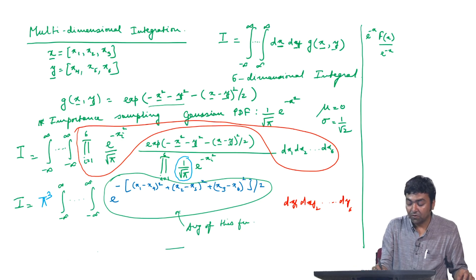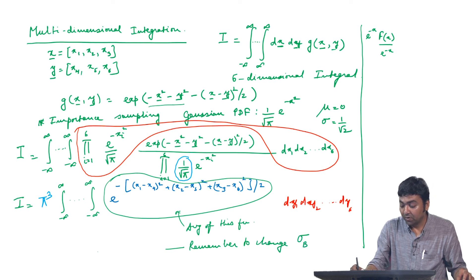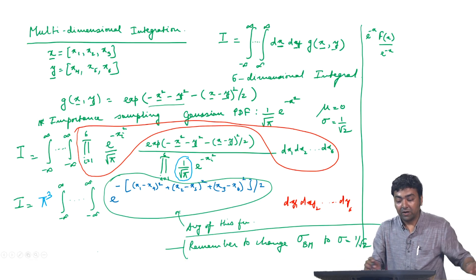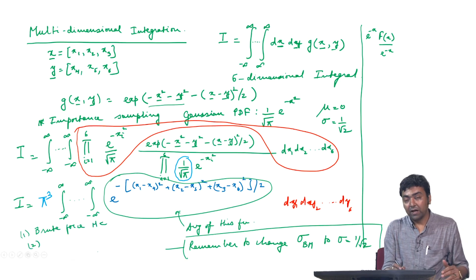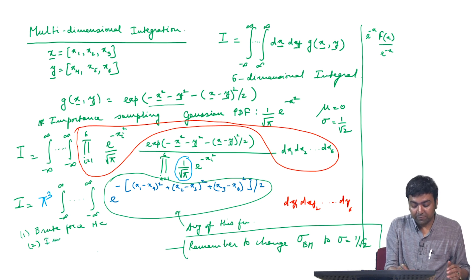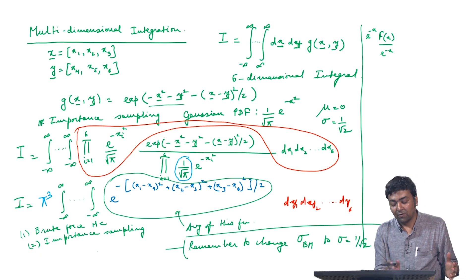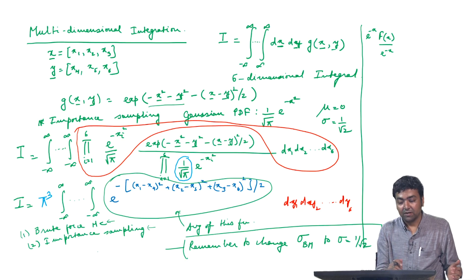To write this as a piece of code, remember to change the Box-Muller sigma from σ=1 to σ=1/√2, otherwise the integral will be wrong. You should write two codes: one using brute-force Monte Carlo and another using importance sampling as discussed, and compare how many random numbers are needed in each case to reach the same level of accuracy.